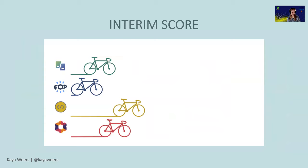So you will see the interim score - the yellow bike, CodeTogether, is now first, and the pink bike, Git Live, is second.